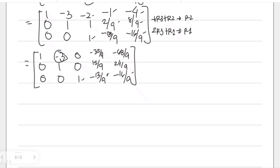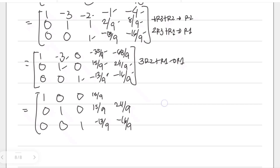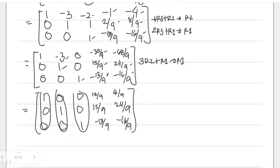Finally, to make the negative 3 entry in row one zero, we compute 3 times row 2 plus row 1 for a new row 1. Row three stays: 0, 0, 1, negative 13/9, negative 16/9. Row two becomes: 0, 1, 0, 15/9, 24/9. For new row one: 3 times 15/9 is 45/9; 45/9 minus 35/9 gives 10/9. Three times 24/9 is 72/9; 72/9 minus 68/9 gives positive 4/9. This completes the reduced row echelon form, as all pivot columns now contain zeros in the other entries.